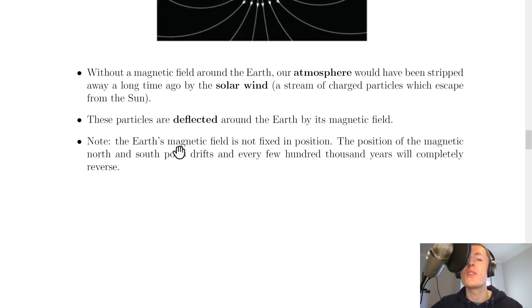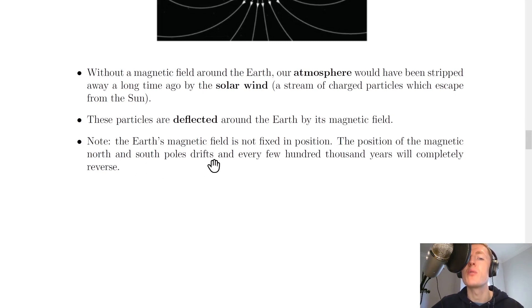Note that the earth's magnetic field is not fixed in position — the magnetic north and south poles drift, and every few hundred thousand years will completely reverse. That's all for this video folks, thanks for watching. Make sure to give the video a thumbs up, subscribe to the channel, and I'll see you in the next one. Take care.